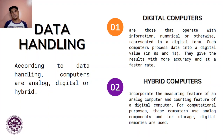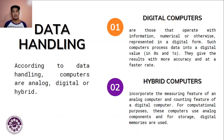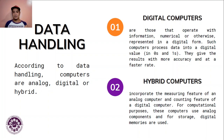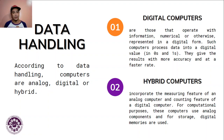For example, when you press the letter A on your keyboard, the computer doesn't read it as letter A — it reads it as a series of zeros and ones, like 0 1 1 0 1 1 0 0. Everything you input into the computer is represented as zeros and ones. That's how the computer knows which letter or character you've typed.